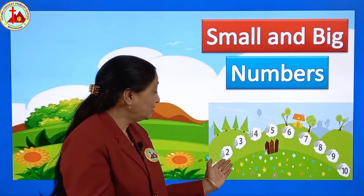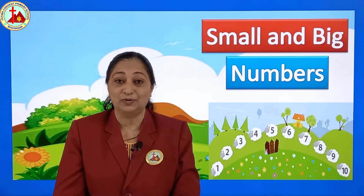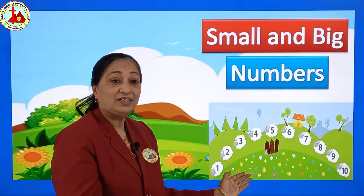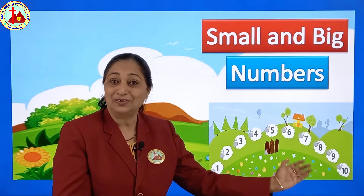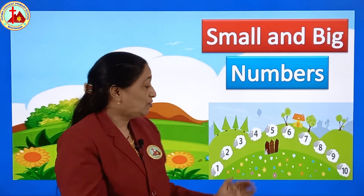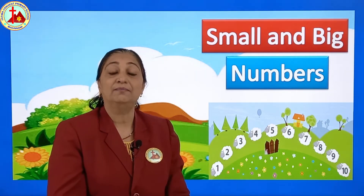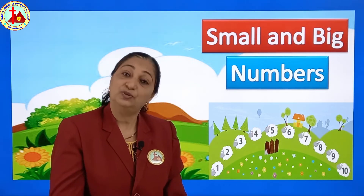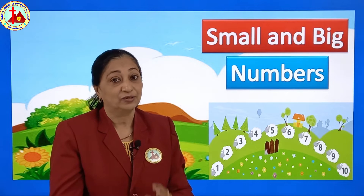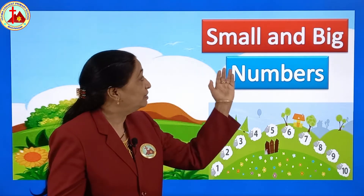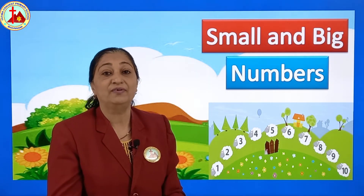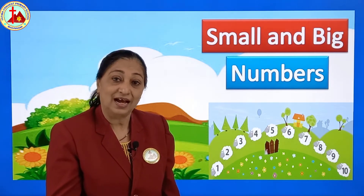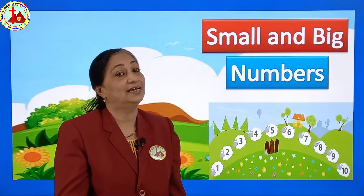You have already learned all these numbers 1 to 10. Before numbers you have learned and after numbers you have learned. So after numbers are always big numbers and before numbers are always the smaller numbers. Now that you understand, we will begin the new topic of big and small numbers. Let's begin.